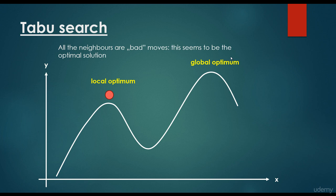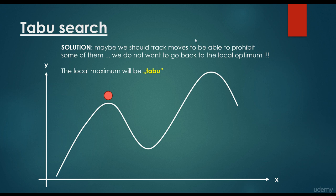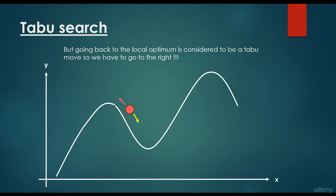We would like to find the global optimum instead of the local optimum. If we go one step further, the gradient leads us back to the local maximum. So maybe we should track moves in order to prohibit some of them — we don't want to go back to the local optimum. The local maxima will be tabu, meaning we prohibit the algorithm from revisiting that position over and over again. From this position, we can go right or left; the gradient points back to the local optima, but we prohibit that move — and this is how we are able to visit the global maxima.